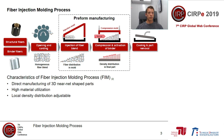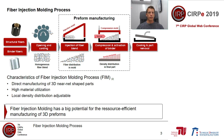Within this process, it is also possible to adjust the load-to-density distribution, which can be done because of the geometry difference between the injection mold and the compression mold, as shown in the figure above. Therefore, we can say that fiber injection molding has very big potential for the resource-efficient manufacturing of 3D preforms.